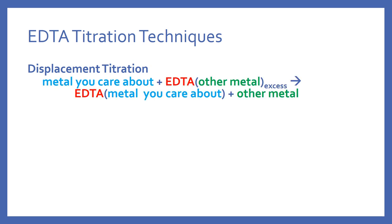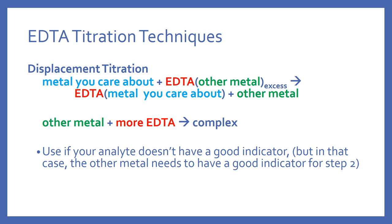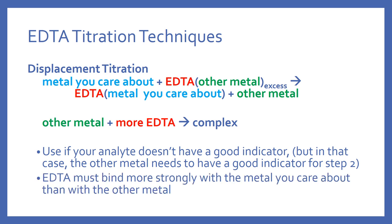A variation is the displacement titration: you mix a known excess quantity of an EDTA-metal complex (the other metal, e.g., 0.1 M EDTA-other metal) with the analyte metal. EDTA prefers the analyte metal and displaces the other metal into solution. In the second step, you titrate the released other metal with more EDTA to determine the original analyte concentration. The other metal needs a good indicator, and EDTA must prefer the analyte metal over the other metal for this to work.